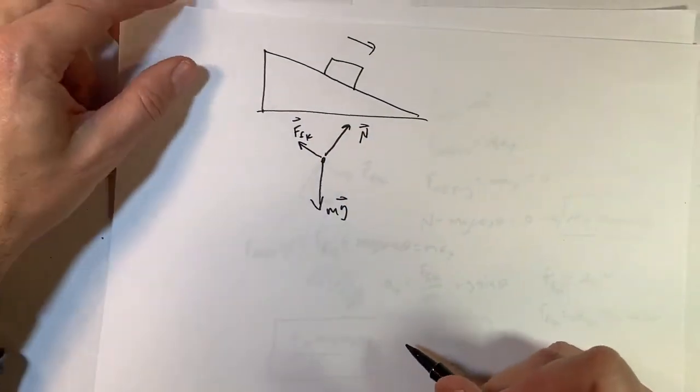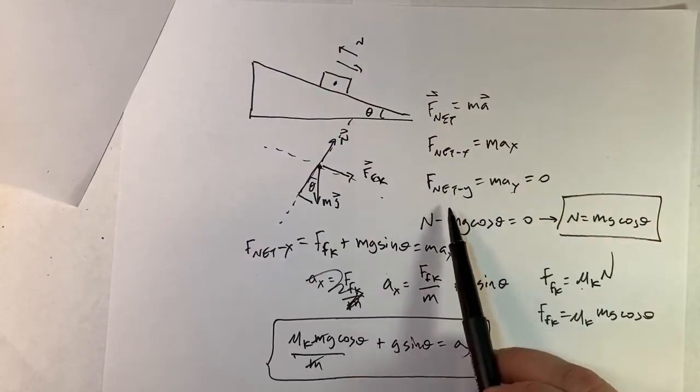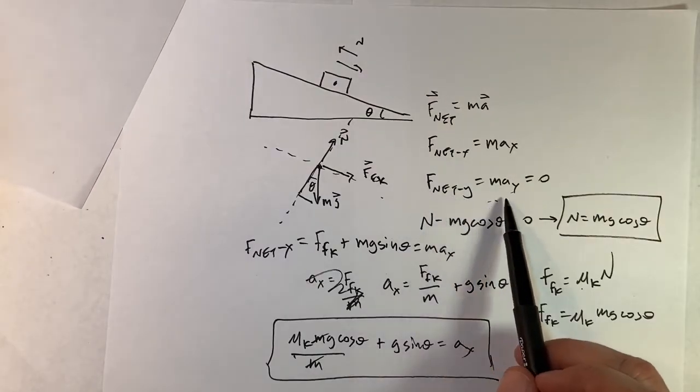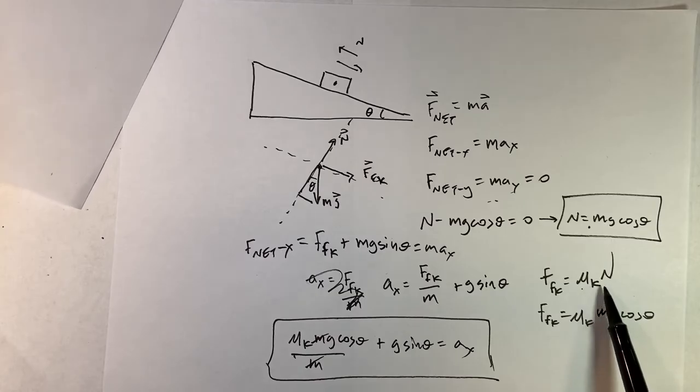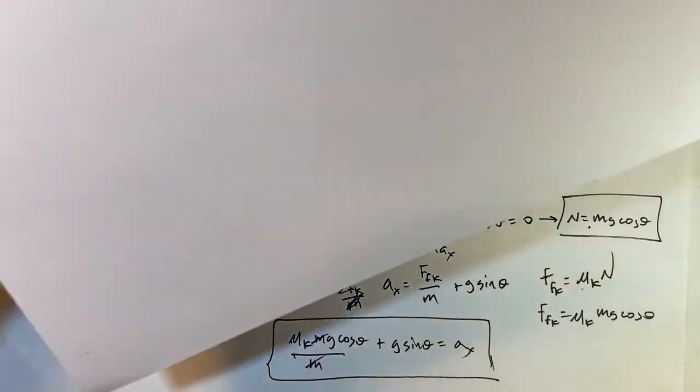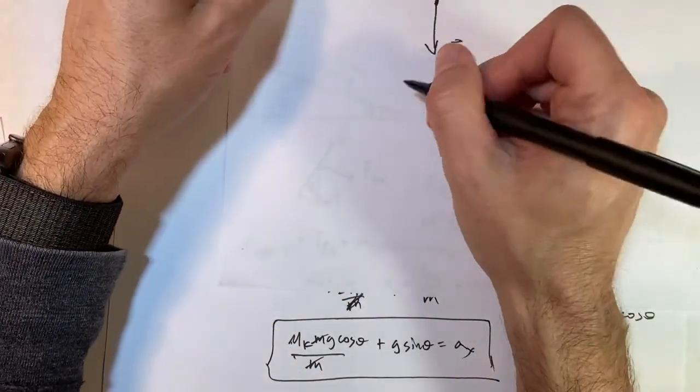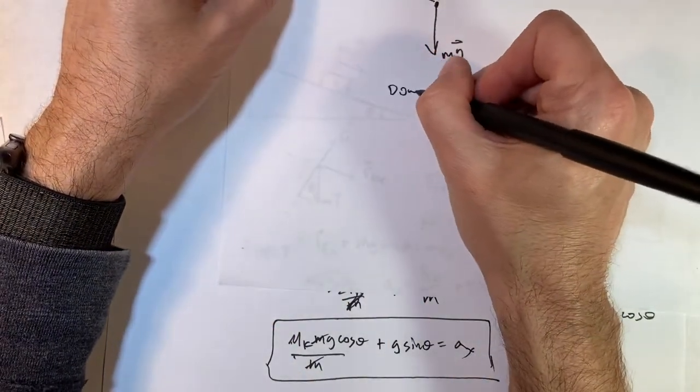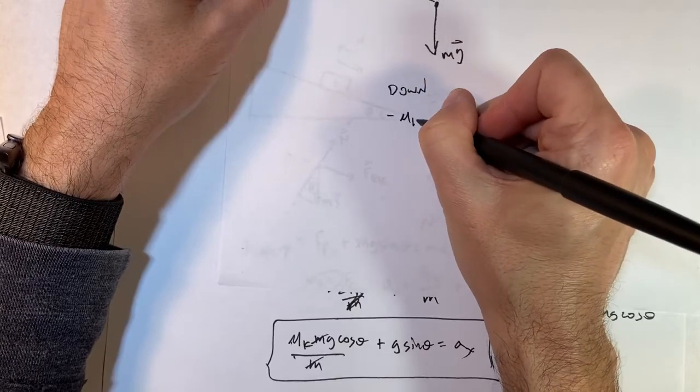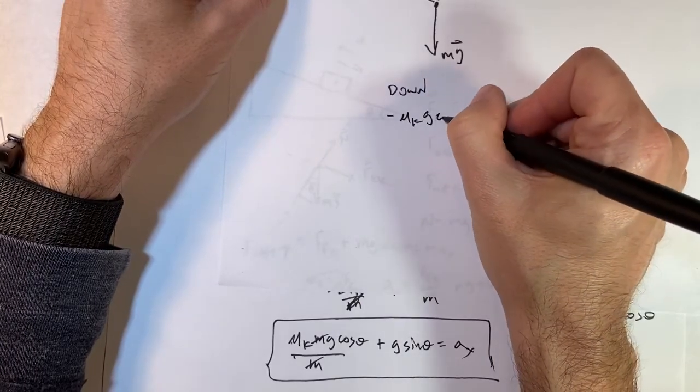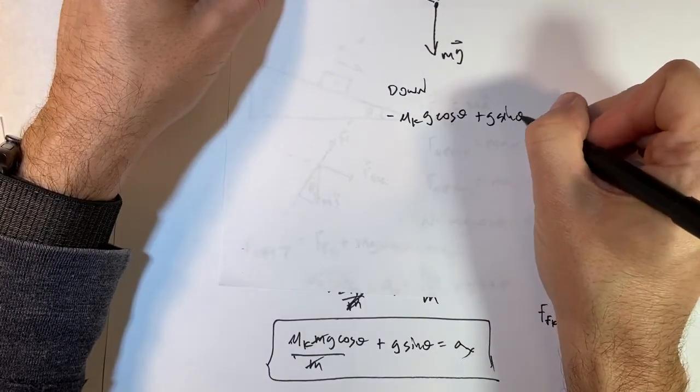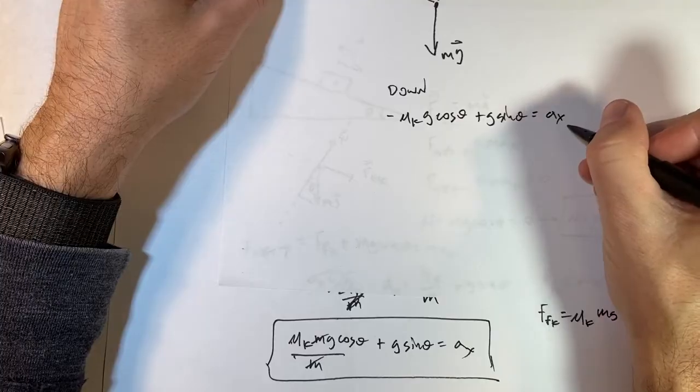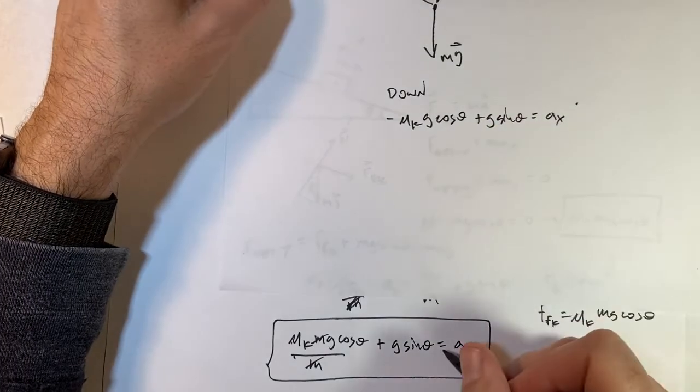So if you go back over here, what changes? In this f net y does not change. This equation doesn't change. The friction force doesn't change. The magnitude doesn't change. The only thing that changes, I need to put a minus sign right there. So there should be a minus sign down here. So I can, you can read the whole problem, but this is down. I get minus mu k g cosine theta plus g sine theta equals ax down. This is down and that's up.